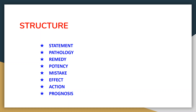Here is the structure under which we will be discussing Cain's observations. First, we will discuss the statement. Then we will try to understand under which pathological conditions we get this type of observation, whether the remedy prescribed is right or wrong, whether the potency is right or wrong, any mistake of physician, the effect seen on the case after prescription, any corrective action the physician must take, and lastly, the prognosis of the case.